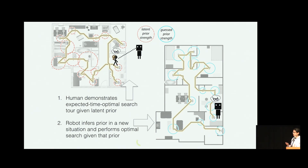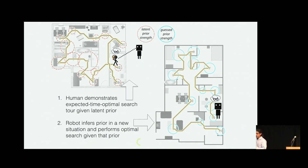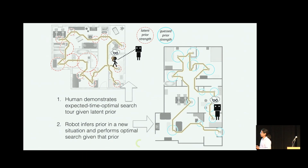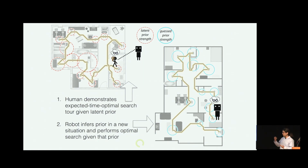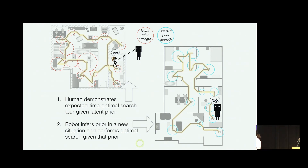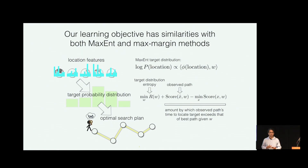A human demonstrator is shown a sequence of environments and asked how they would most efficiently locate the target in each environment. Their answer is in the form of an optimal search tour. This implies the human has some latent prior belief over where the target might be located. In learning, we try to back out that prior in a way that generalizes across environments. You can think of this as a latent logistic regression approach: at each location we have a feature vector, and we assume the log probability of the target being at each location is proportional to the dot product between the feature vector and a weight vector to be learned.